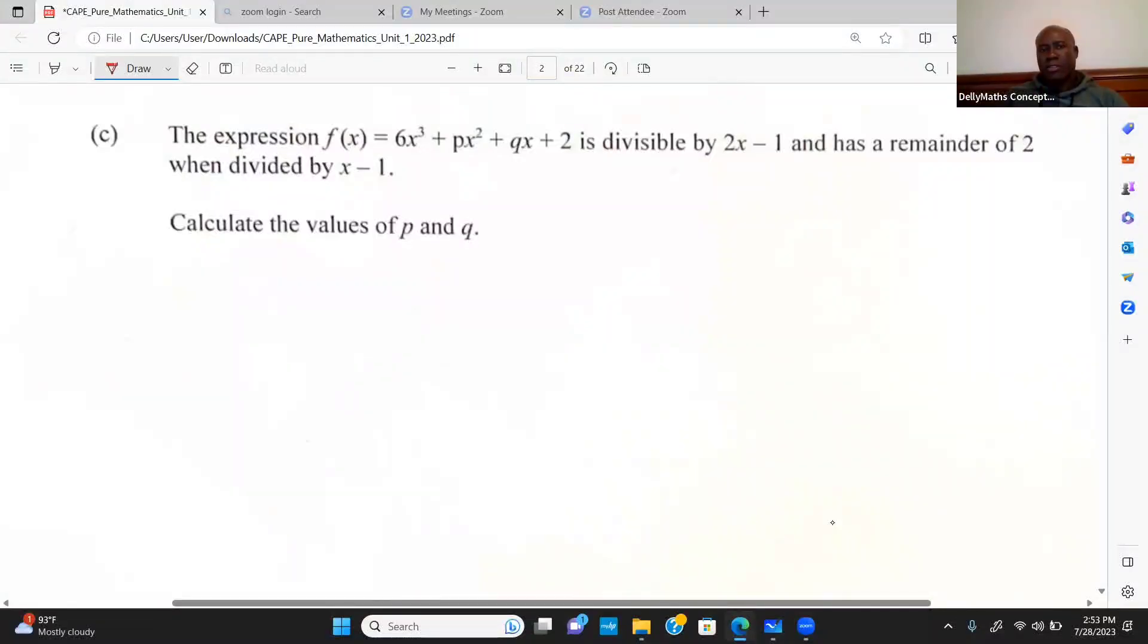The expression f(x) = 6x³ + px² + qx + 2 is divisible by 2x - 1 and has a remainder of 2 when divided by x - 1.